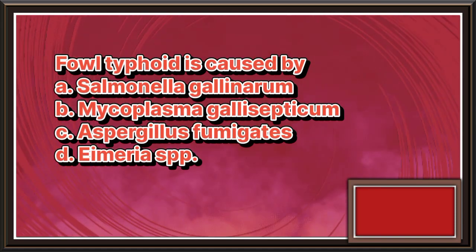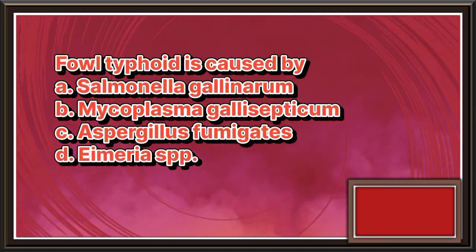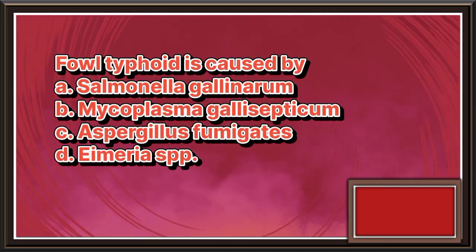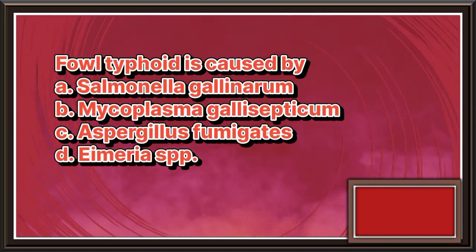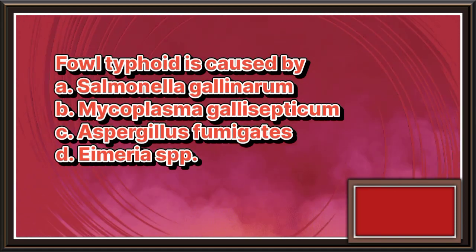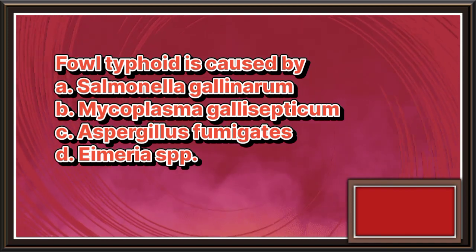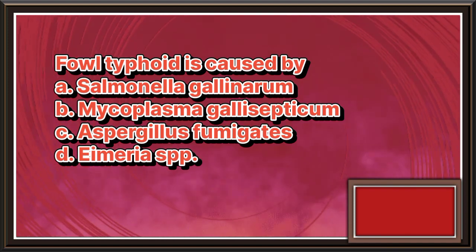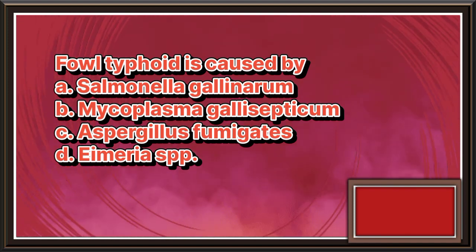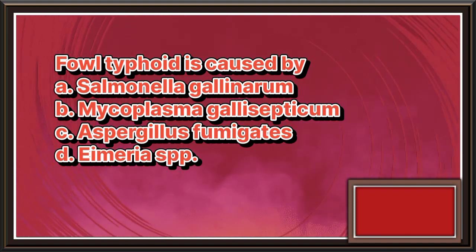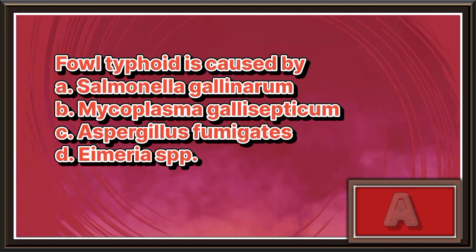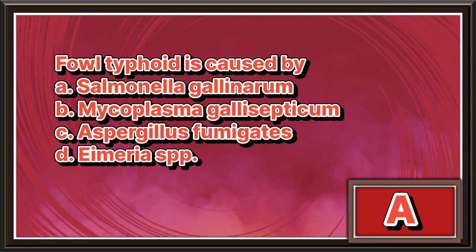Fowl typhoid is caused by. a. Salmonella gallinarum. b. Mycoplasma gallisepticum. c. Aspergillus fumigatus. d. Eimeria spp. The answer is letter a.